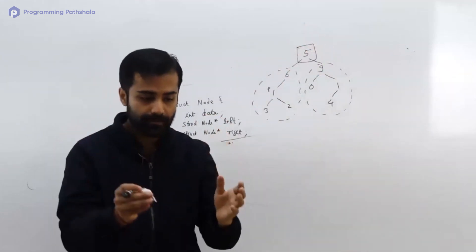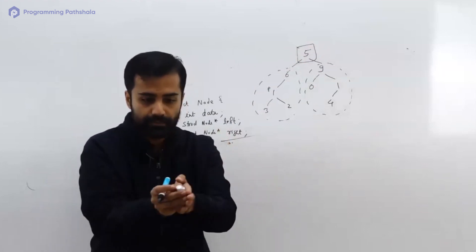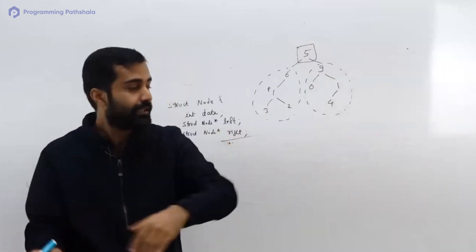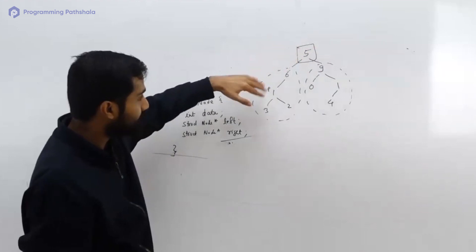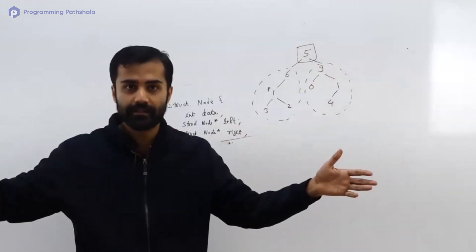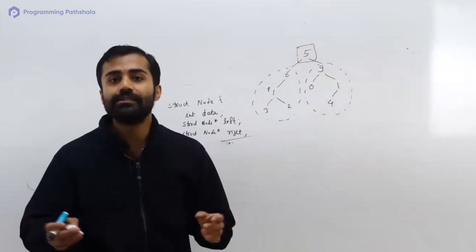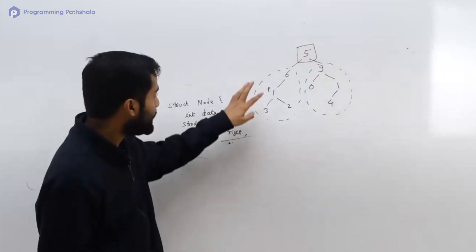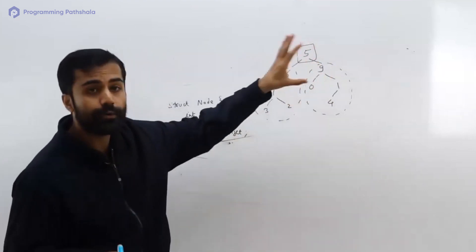When you are using simple iteration, moving from one place to the other, then you will keep going in one direction only. And this is a tree, this is not one directional. This can be multi-directional, you understand? So you cannot just make use of something as simple as iteration.